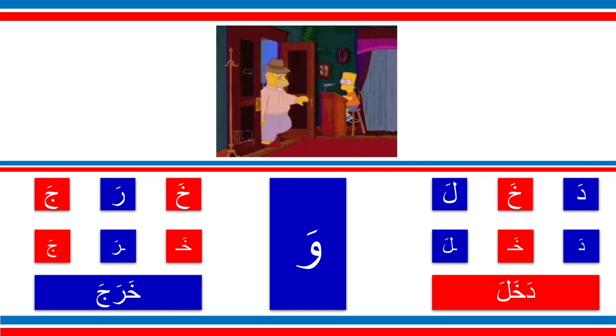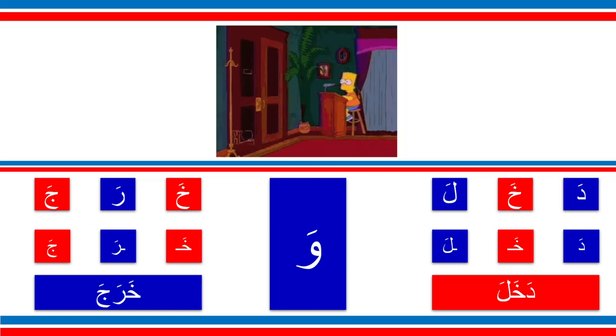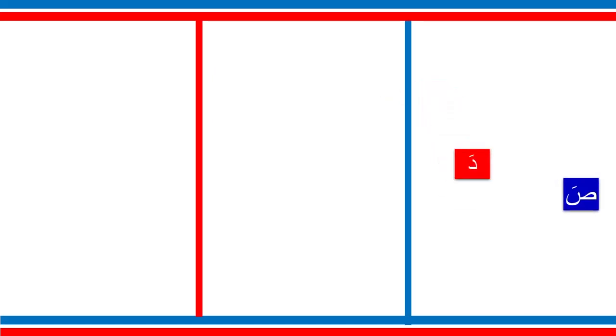So this man dakhala wa kharaja — he dakhala and he kharaja. So what is he doing? It's the verb of dakhala wa kharaja — meaning 'he entered and he exited.'